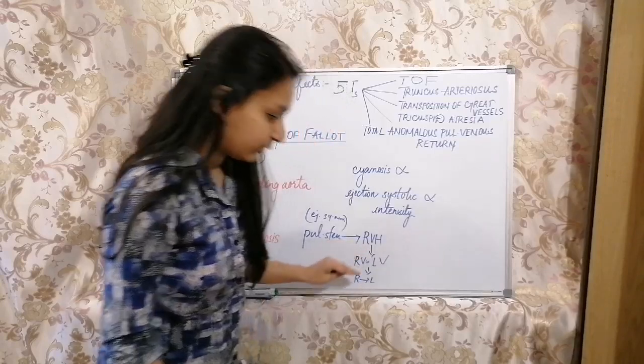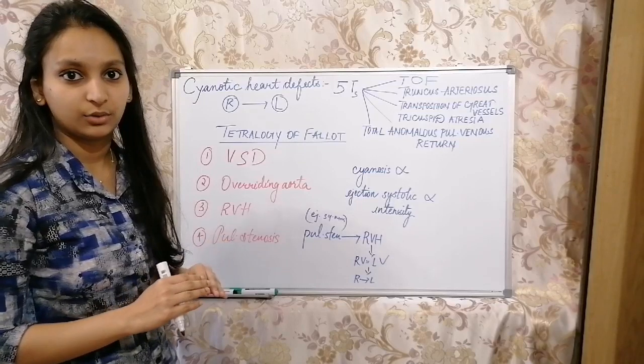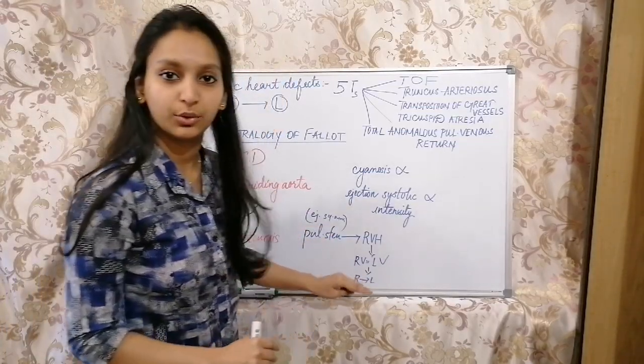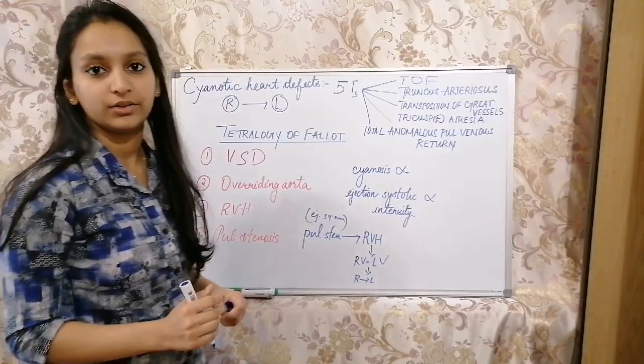Because of equalizing of pressure between right ventricle and left ventricle, VSD will be silent. Even though VSD is there, blood will be flowing from right to left. This is a short pathophysiology of Tetralogy of Fallot.